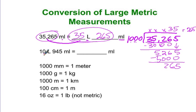Okay, how about this one right here? 10 liters, 945 milliliters is equal to how many milliliters? This is the opposite of the last one that we just did. There are 1,000 milliliters in a liter, so you're going to do 10 times 1,000.